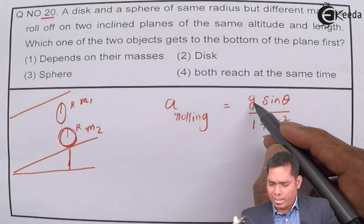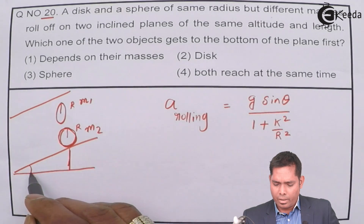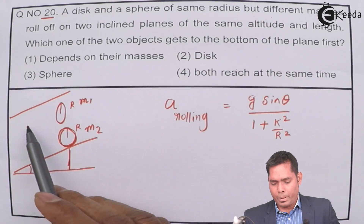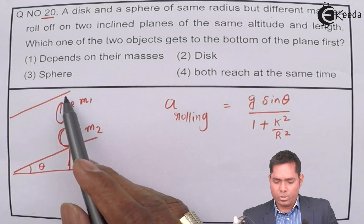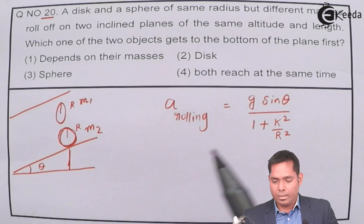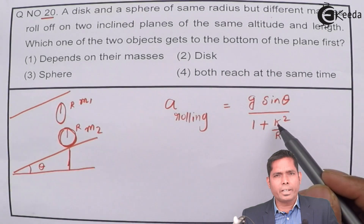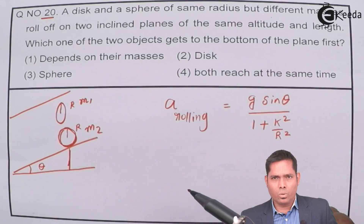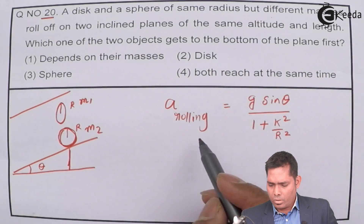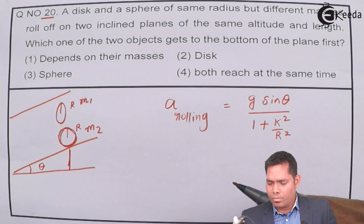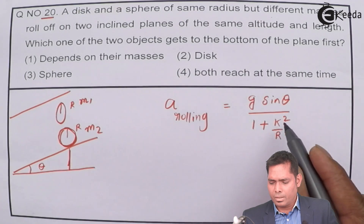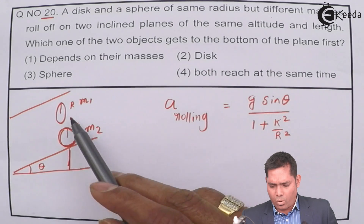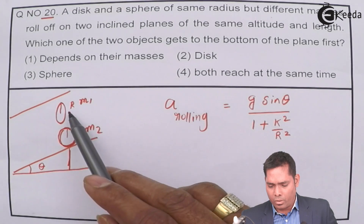Here g is acceleration due to gravity, θ is the angle of inclination — the angle the plane makes with the horizontal — and k is the radius of gyration of the rolling object. Since θ and g are the same for both the disk and the sphere, we only need to compare the k²/r² terms.